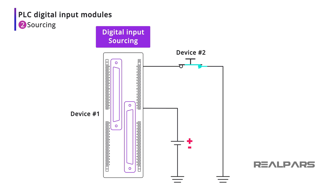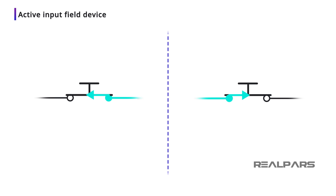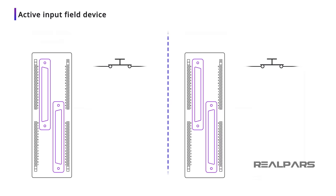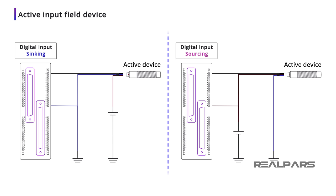Current can flow in either direction through a push-button switch because it is a passive device and not polarity dependent. There are many active digital input devices used in industry today that are polarity dependent — they must be wired correctly or they will not work at all. These active devices will be labeled as either sinking or sourcing. You can learn more about active sensors in our other videos, and we'll direct you there at the end of this video.